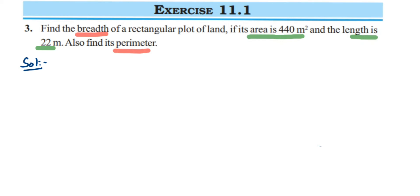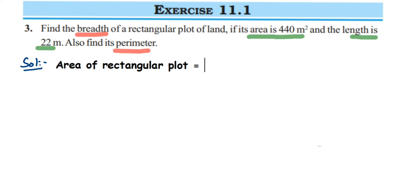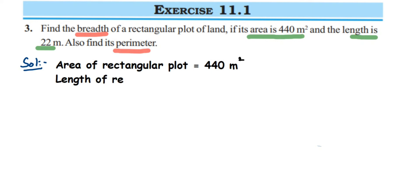Let's write down what we know from the question. Area of rectangular plot is equal to 440 meter square. Next, we have been given the length. Length of rectangular plot is equal to 22 meter.